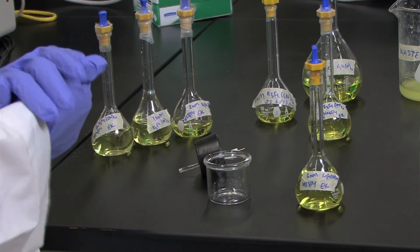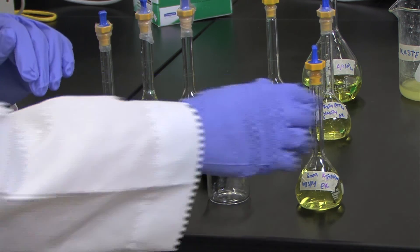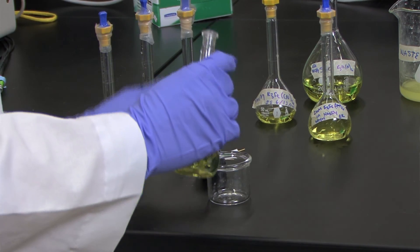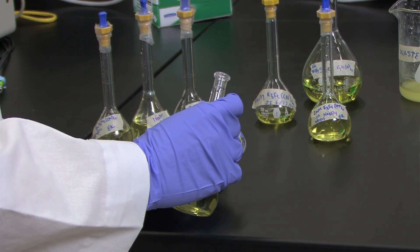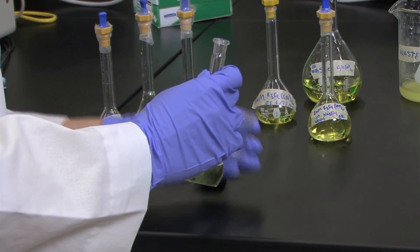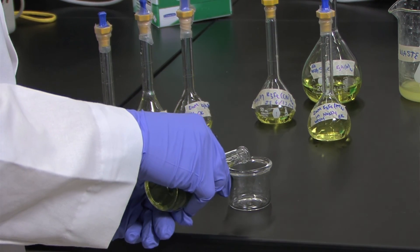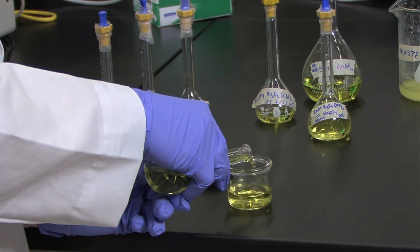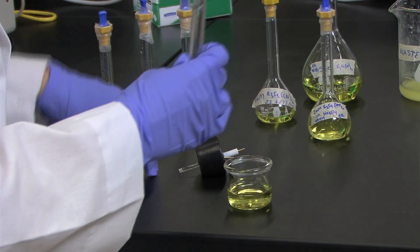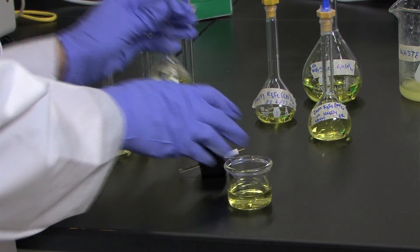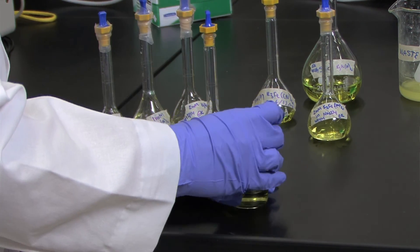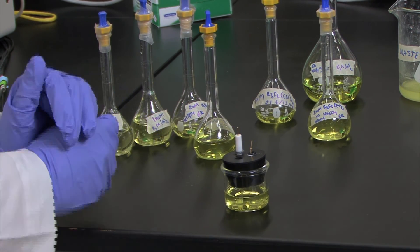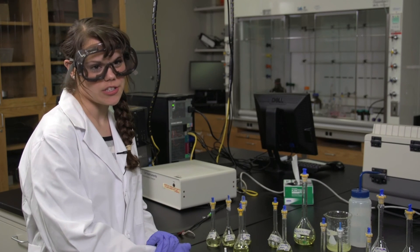Once you've finished preparing all your solutions, you're ready to collect your first measurement. Take your solution and pour it into a clean, dry jar cell. You want the volume to be about halfway so that when you stick the stopper in with your electrodes, the bottom of the electrodes are completely submerged in the solution. Once you put your stopper on, you can walk over to the hood to begin purging.